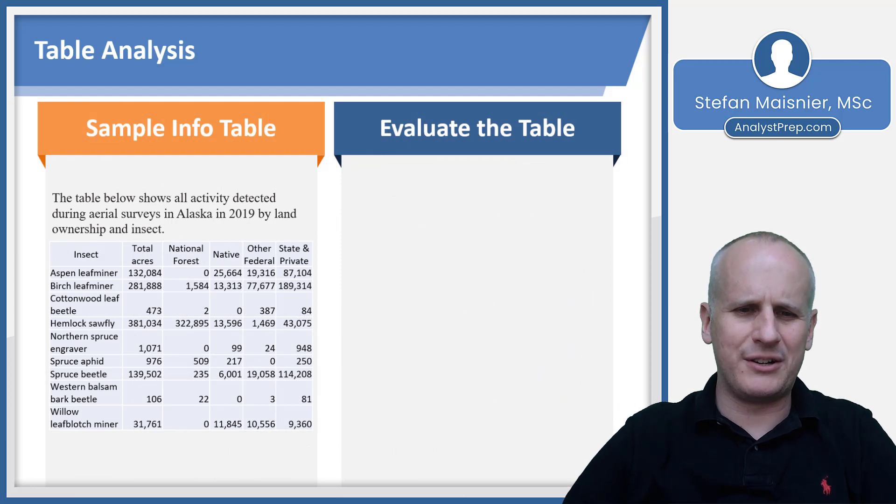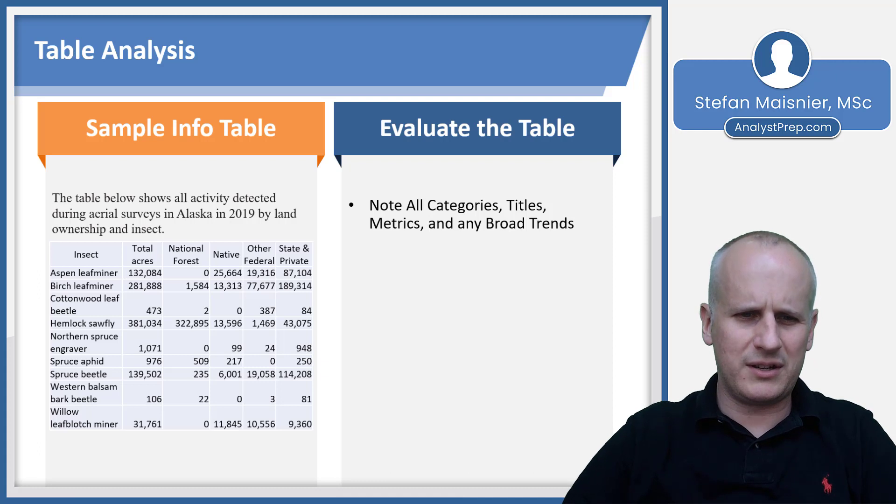We've got a sample info table here on the left-hand side of the screen, and so you want to note your categories, your titles, your metrics, and any broad trends to start. We can see we've got some insects, and then we've got some total acres, we've got national forests, native, other federal and state and private as some categories.